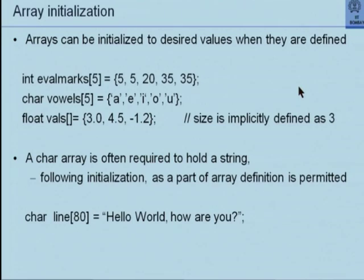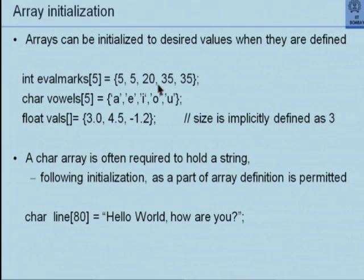First, there is something that we had very briefly seen but I am elaborating it. When we define variables, we know that we can initialize variables at the time of their definition. In exactly the same fashion, arrays can also be initialized. The array initialization is done in a peculiar syntax. For example, if you have a marks array of five elements, you can initialize all five elements by putting five values separated by commas in a curly bracket pair. Please note that this is not an assignment statement — it can only be done when you define the array. So it is a one-time initialization.